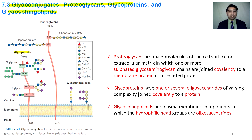Glycoproteins contain one transmembrane protein attached with branched or straight chain oligosaccharides. In glycoproteins, protein is the major component while carbohydrates are present in smaller proportion. Oligosaccharides can be joined to the nitrogen of the asparagine amino acid of the protein, or joined to the oxygen of serine or threonine amino acids of the protein component.